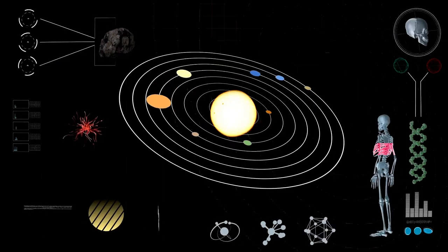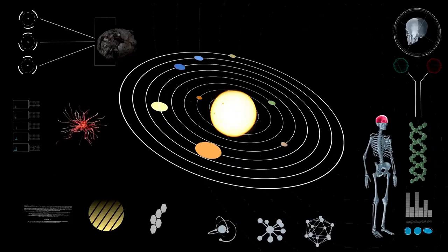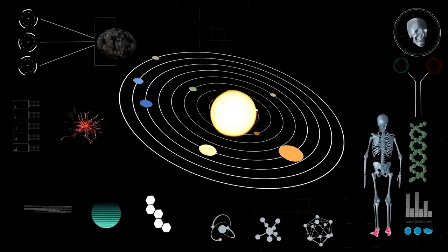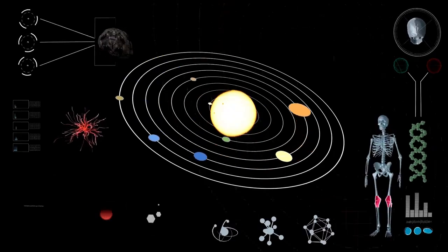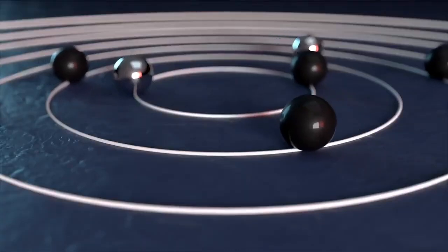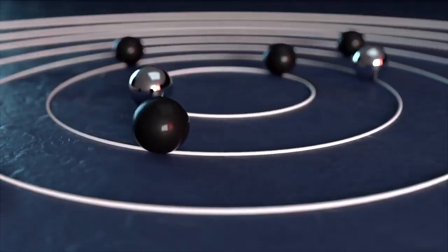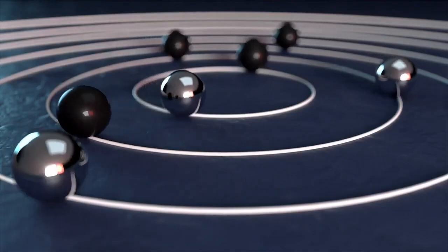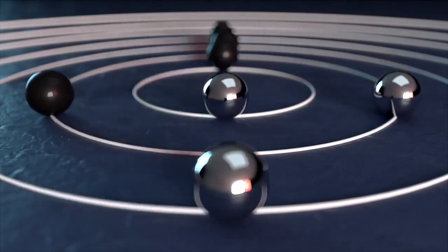The Voyager missions capitalized on a rare planetary alignment that occurs once every 107 years, allowing the spacecraft to perform gravitational slingshots from one planet to another, conserving their limited fuel. Despite launching second, Voyager 1 was the first to reach Jupiter and Saturn, focusing on these planets while Voyager 2 explored Jupiter, Saturn, Uranus, and Neptune.